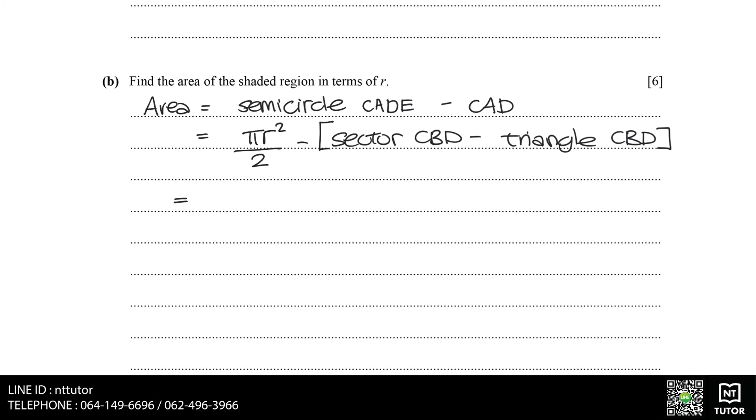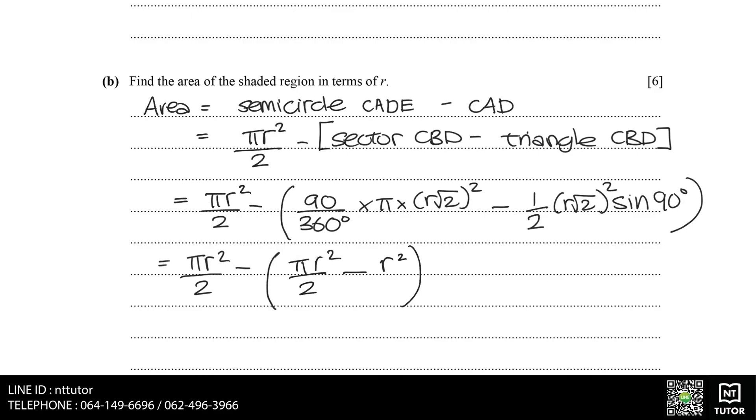Now that we have everything we need in terms of R, we can finally summarize it and work out the area of the shaded region in terms of R. After working out the values and simplifying everything, we get area equals R squared.